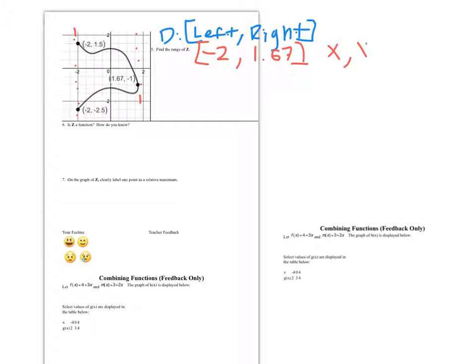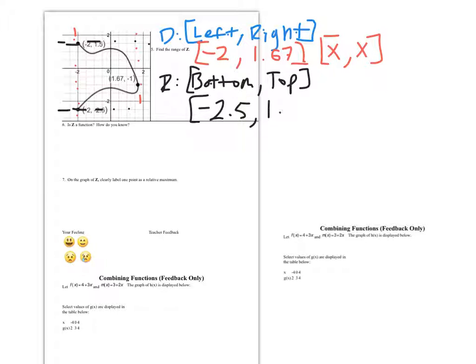For the range we're doing the same thing except instead of left and right we're looking at the bottom and top, so the lowest point and the highest point in our graph. The lowest point is going to be negative 2.5, that's a y value. The highest point is going to be positive 1.5, that's a y value too. So we get a y and a y. That's the only interval that we talk about that uses y's, and that's my range.